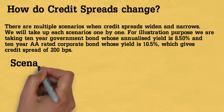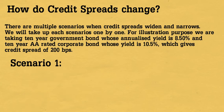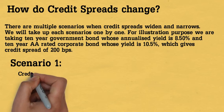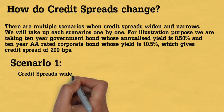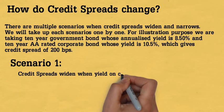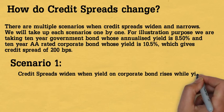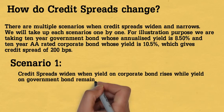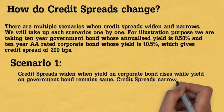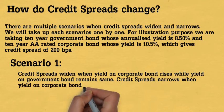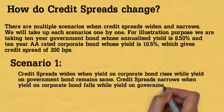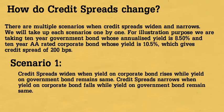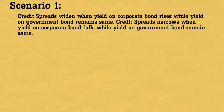Scenario 1. Credit spread widens when the yield on the corporate bond rises while the yield on the government bond remains the same. Credit spread narrows when the yield on the corporate bond falls while the yield on the government bond remains the same.